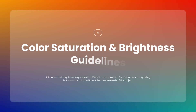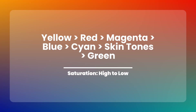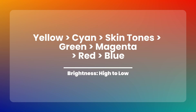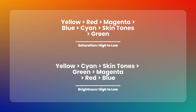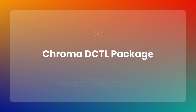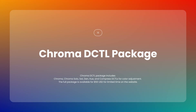To sum up, here is a general guideline for the sequence of saturation and brightness across different colors. Think of these similarly to the rule of thirds in photography — a guideline that helps you achieve better results, but not something you need to follow blindly. These sequences will give you a strong foundation for balancing color in your work, but always adapt them to suit the creative needs of your project.